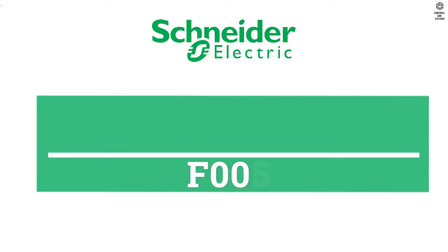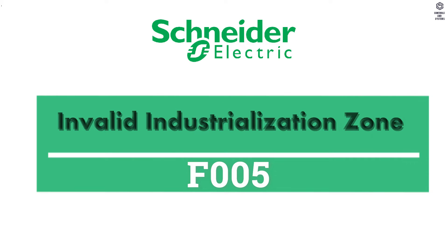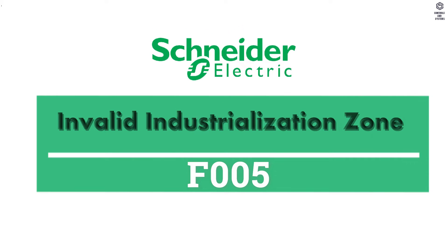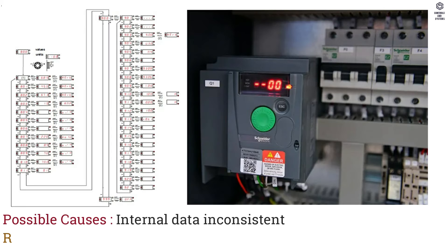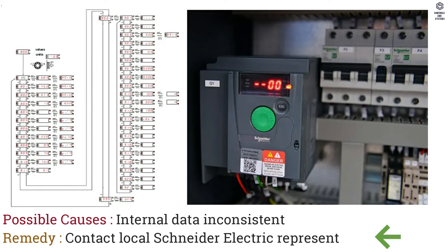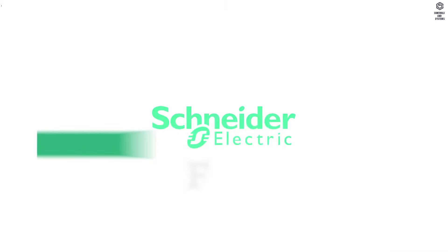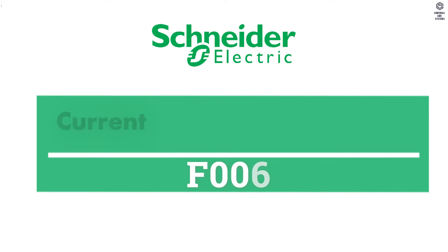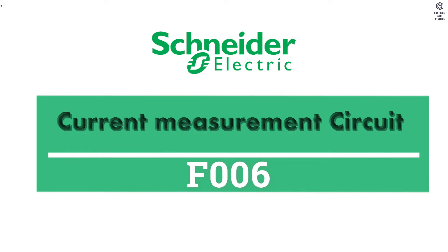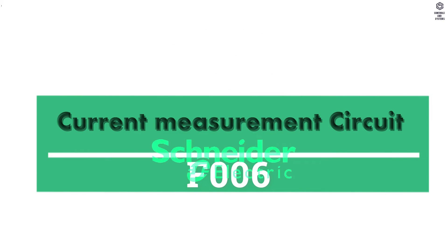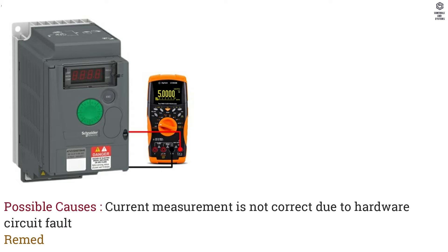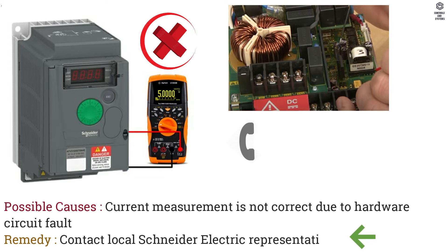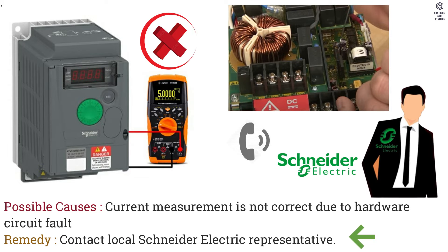F005 Invalid Industrialization Zone. Possible Causes: Internal Data Inconsistent. F006 Current Measurement Circuit. Possible Causes: Current Measurement is not correct due to hardware circuit fault.